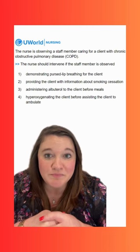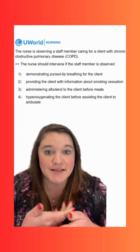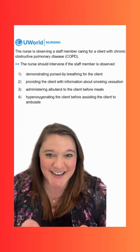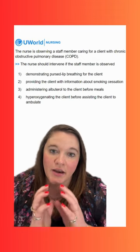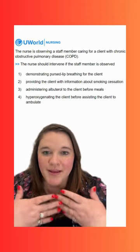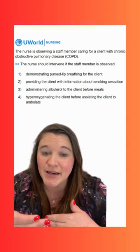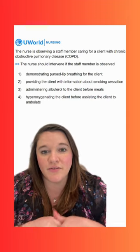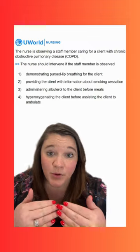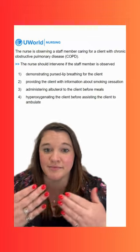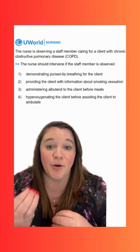Option four says hyper-oxygenating the client before assisting the client to ambulate. This would require intervention because it's something we don't want to do, making it our correct answer. Clients with COPD function with a slightly lower SpO2 than normal. When we give high concentrations of oxygen or hyper-oxygenate these clients, we can actually cause carbon dioxide retention, which can cause other problems. We want to administer the lowest concentration of oxygen possible to achieve our desired, prescribed SpO2 goal, and be very wary of over-oxygenating these clients.